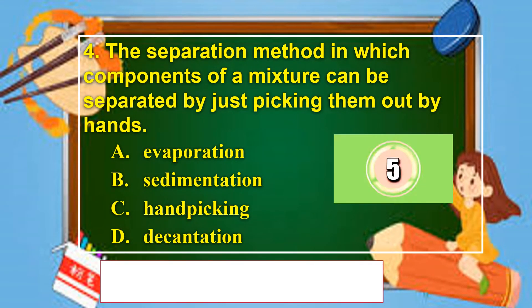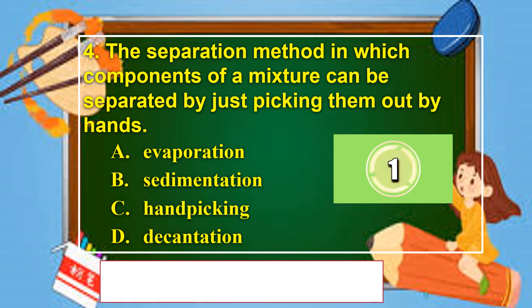Question 4: The separation method in which components of a mixture can be separated by just picking them out by hands. Is it A. Evaporation, B. Sedimentation, C. Handpicking, or D. Decantation? The correct answer is letter C. Handpicking.